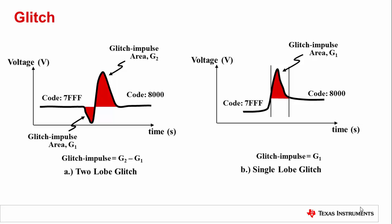Related to settling time is another specification called glitch, or glitch area. While the settling time specification is dominated by the output buffer, the glitch specification is dominated by the DAC itself, and glitch will make contributions to settling time. Glitch impulse area is defined as the area associated with the overshoot or undershoot created by a code transition, and is generally quantified in volt-seconds. There are two different types of glitches — single-lobe and double-lobe — which are mostly dependent on the DAC architecture.